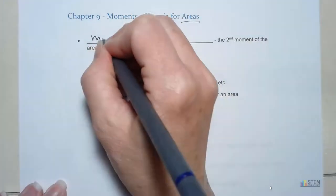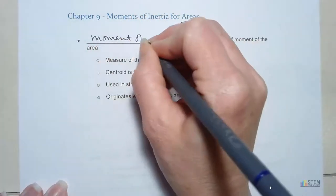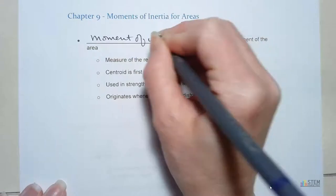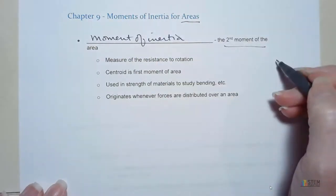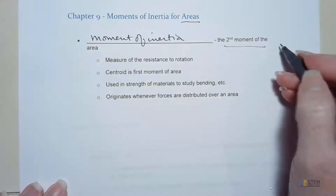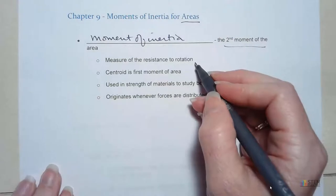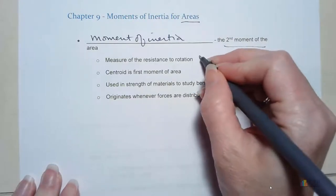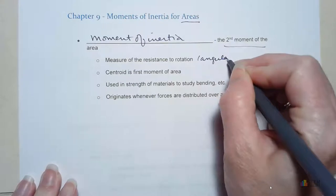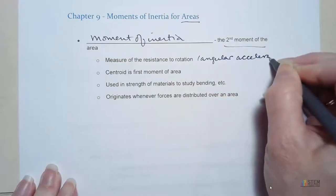The moment of inertia for an area is basically the second moment of the area. Essentially, it's the measure of the resistance to rotation, or the resistance to angular acceleration about a certain axis. That's all it is.